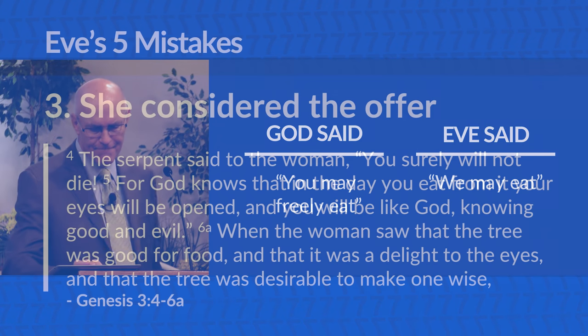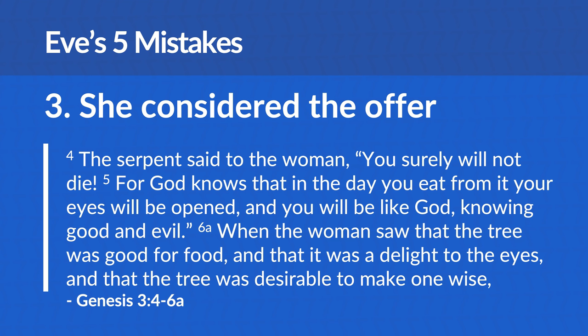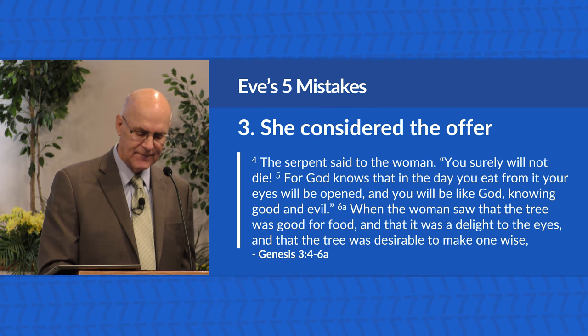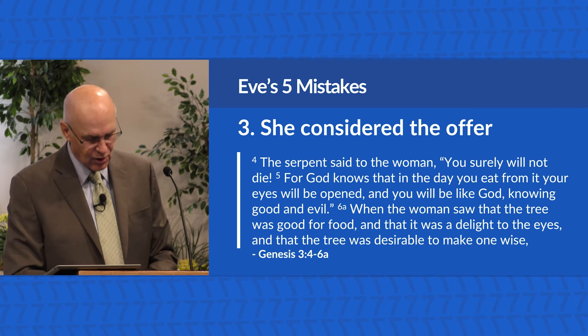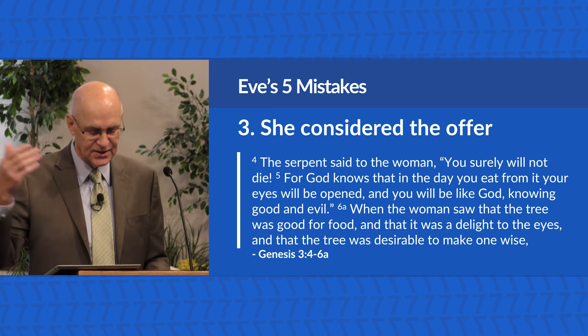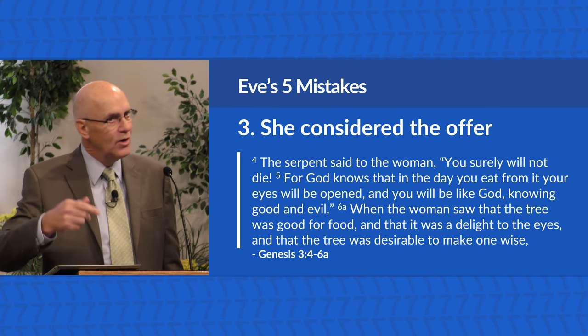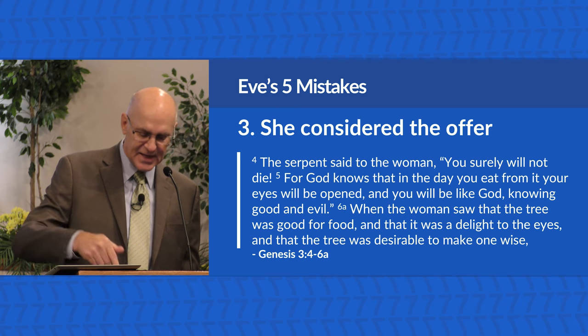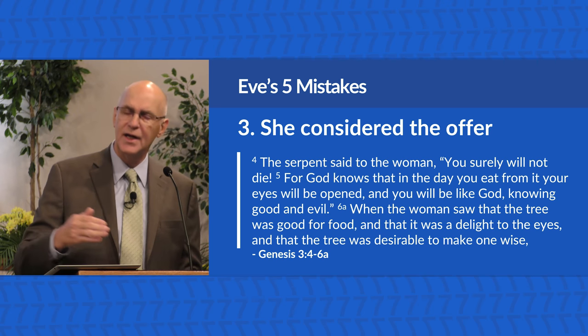Mistake number three: she considered the offer. The serpent said to the woman, 'You surely will not die. For God knows that in the day you eat from it, your eyes will be opened and you will be like God, knowing good and evil.' When the woman saw that the tree was good for food, and that it was a delight to the eyes, and that the tree was desirable to make one wise — had Eve rebuked Satan at this point, the matter would have been closed and history would have been much different. Note that the temptation is the same one that led to Satan's own fall: 'You will be like God.' Eve discusses the matter with Satan, thus considering his proposal.